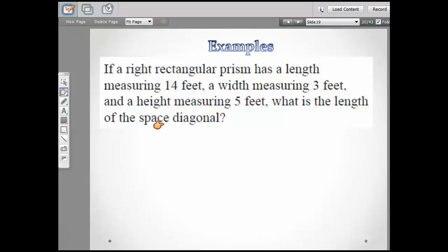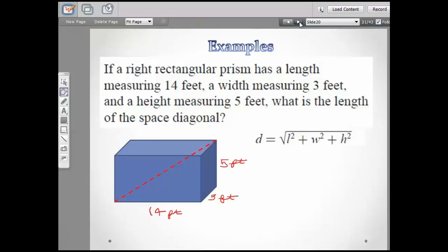If a right rectangular prism has a length measuring 14 feet, a width measuring 3 feet, and a height measuring 5 feet, what is the length of the space diagonal? The space diagonal is that diagonal we were talking about going from one corner to the other on the opposite side. What I like to always do when I've got these kind of problems, I like to go ahead and draw it out. I always draw it out. Look how I got my space diagonal. It's going from this corner in the front to this corner at the top and the back.